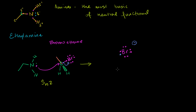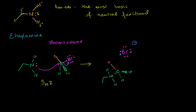Let me draw the result. We have that carbon with one hydrogen sticking out and the other hydrogen behind it, bonded to another carbon - really a CH3 with three hydrogens. Now the ethylamine has attached to it: the nitrogen is bonded to two carbons with a hydrogen on it, and the magenta electron has been given to the carbon. Since the nitrogen gave away an electron, it now has a positive charge.